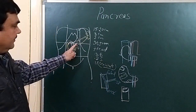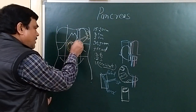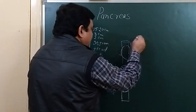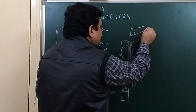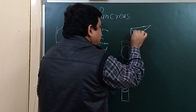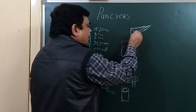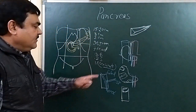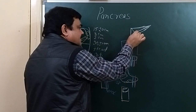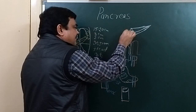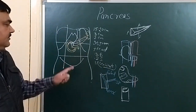The third part is the body. In cross-section, the body is triangular. It has three borders — superior border, inferior border, and anterior border — and three surfaces: anterior surface, inferior surface, and posterior surface.